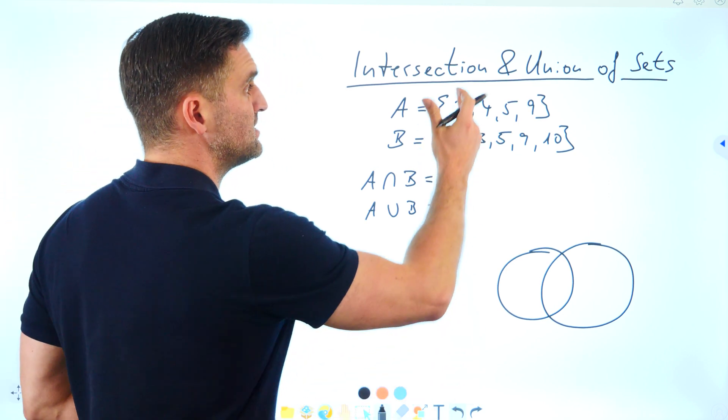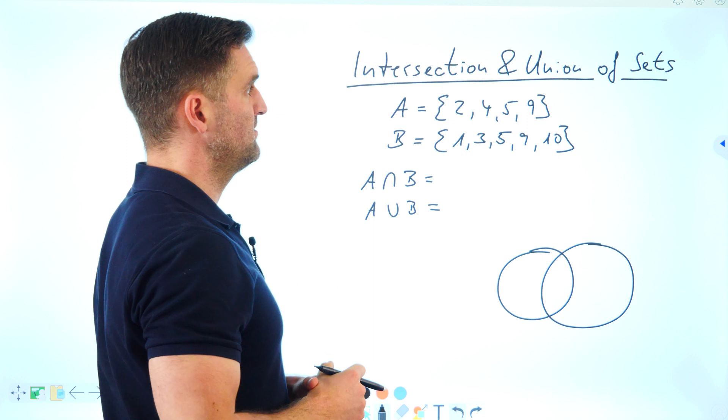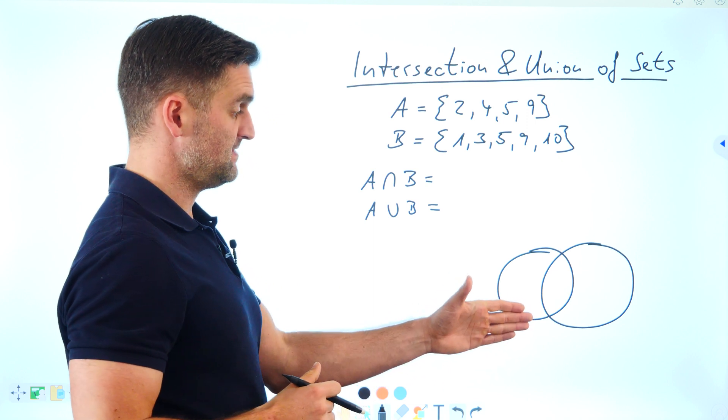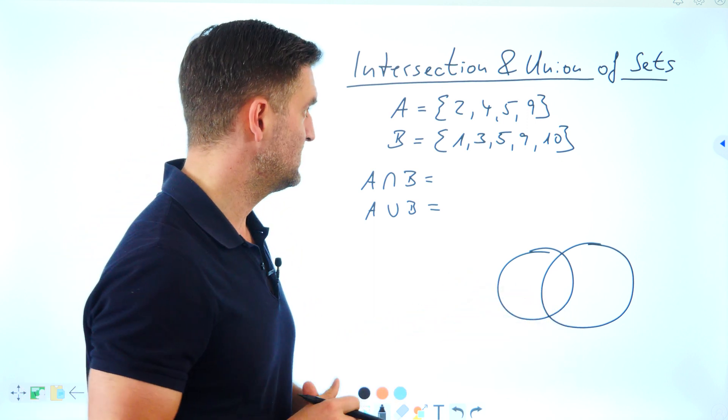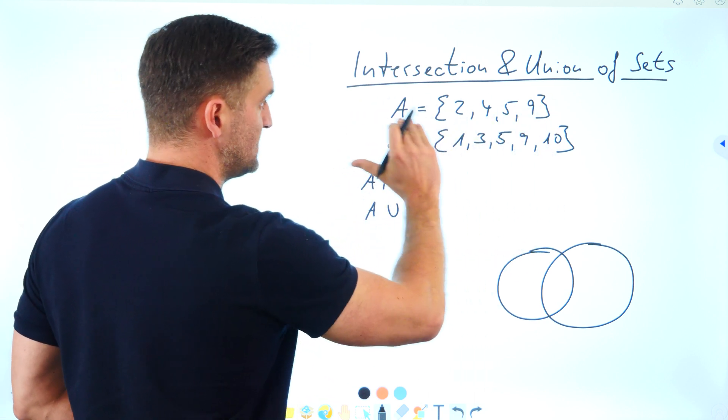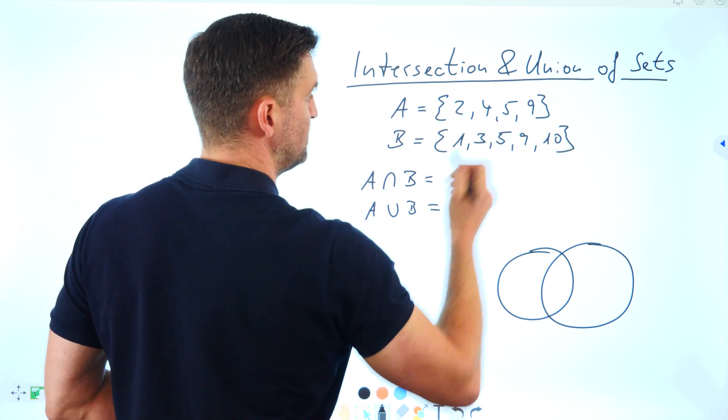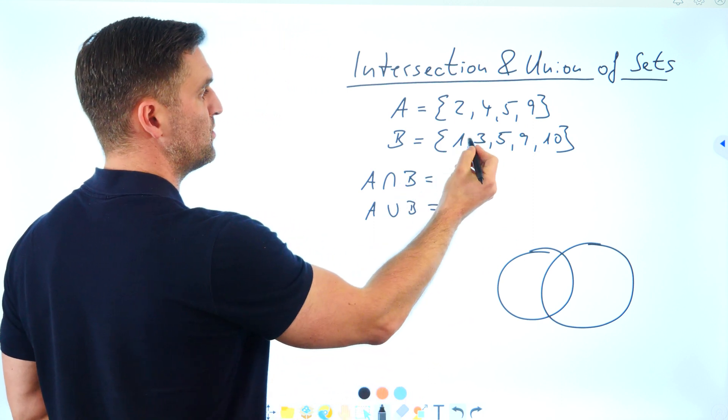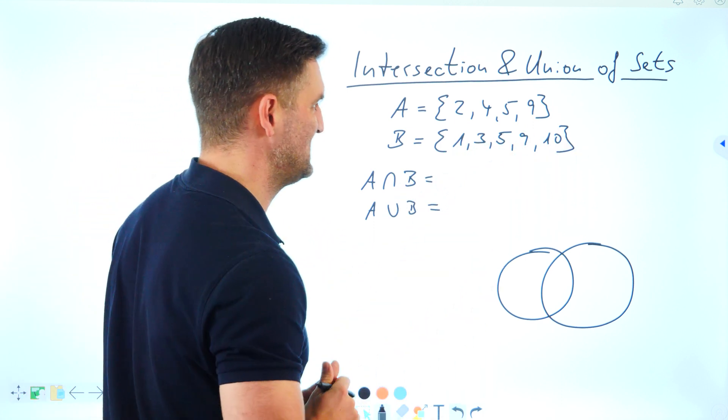So the intersection and union of sets with a visualization at the end via a Venn diagram. Let's say we have set A and set B. Set A with the elements 2, 4, 5, 9 and set B with the elements 1, 3, 5, 9, and 10.